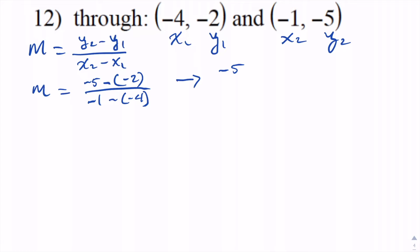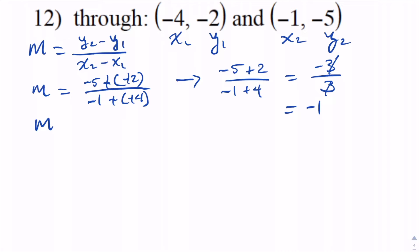The double negatives become positives, so that's negative 5 plus 2 divided by negative 1 plus 4. Negative 5 plus 2 is negative 3, and negative 1 plus 4 is positive 3. So negative 3 divided by positive 3 — the 3s cancel — and we get negative 1. So we have a slope of negative 1.